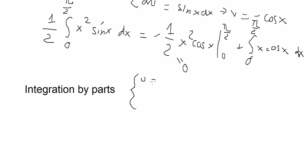So we have u equal to x, du equals dx, dv equals cosine x dx, so we get v equal to sine x.